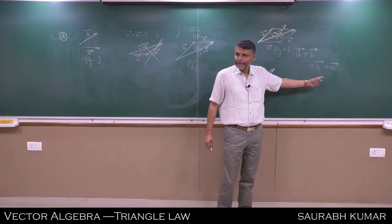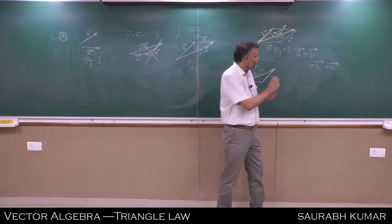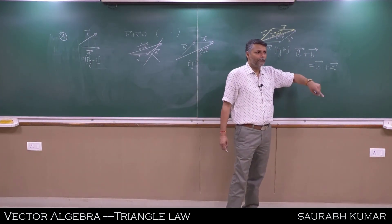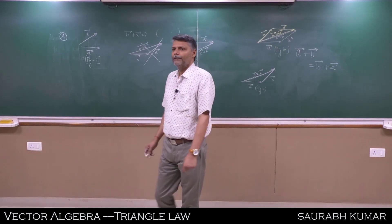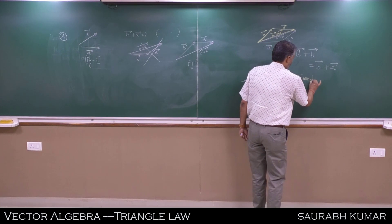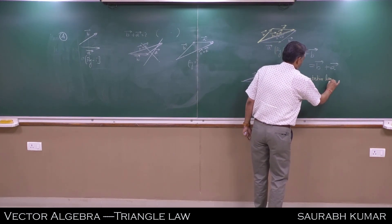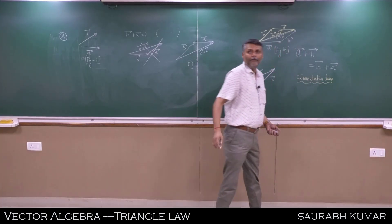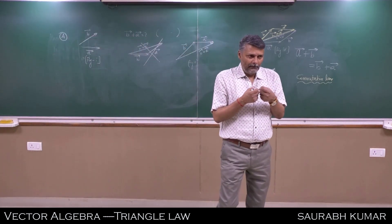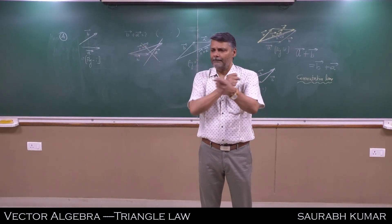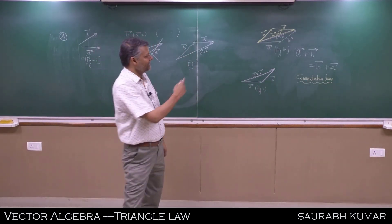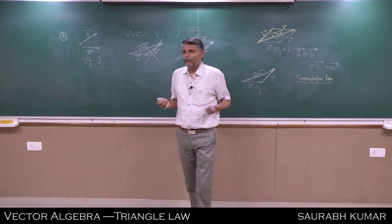From figure four we can conclude: A plus B equals B plus A. This is the commutative law. Associative law means bracket change; commutative law means place change - to commute means changing position. So vector addition obeys the commutative law.